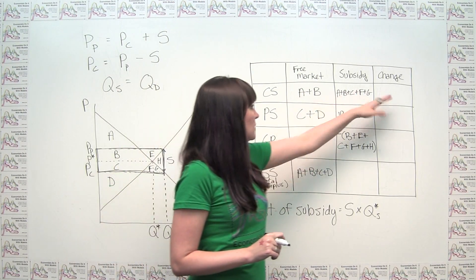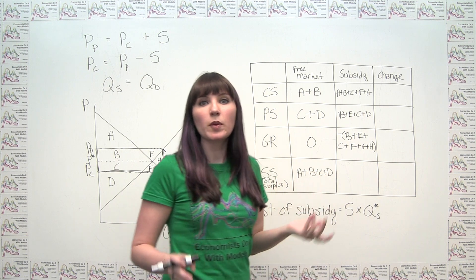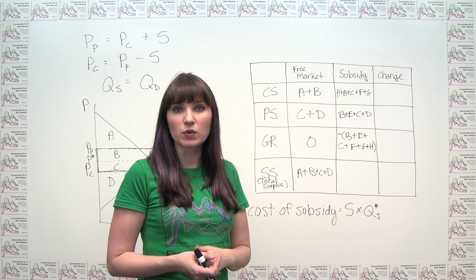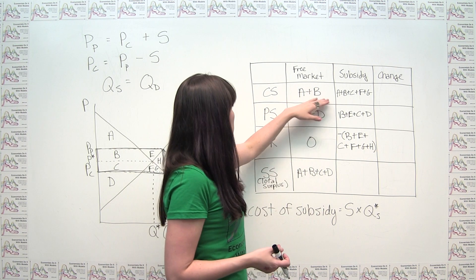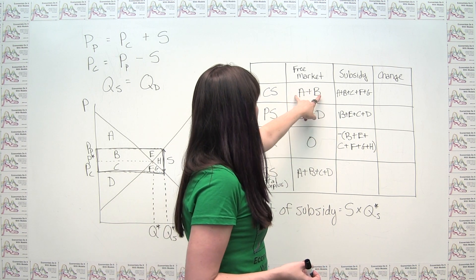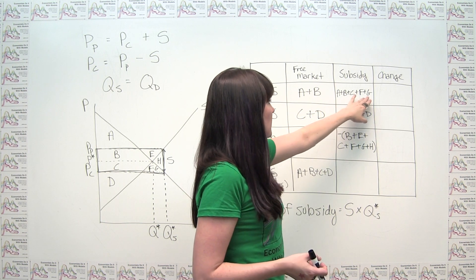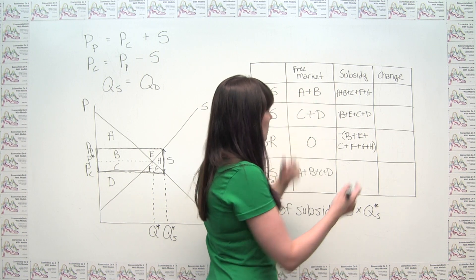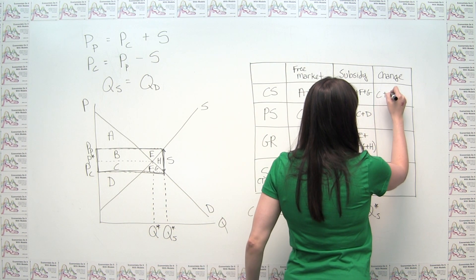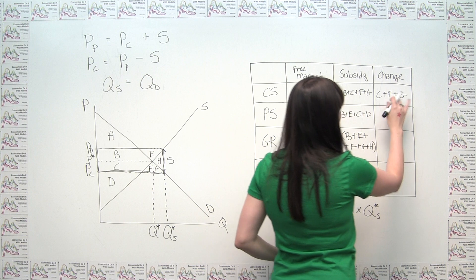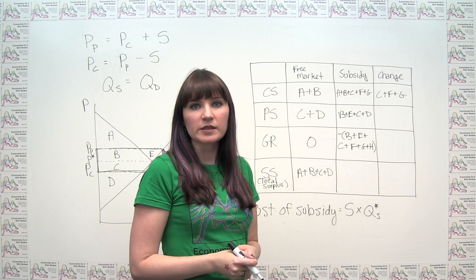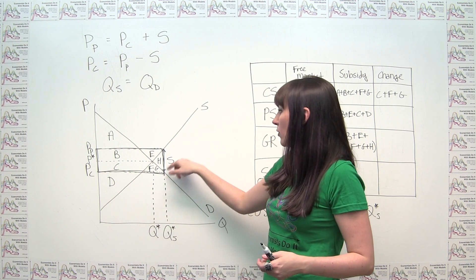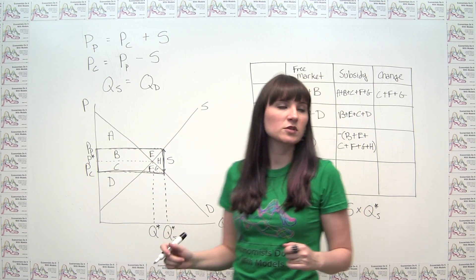So we can go through now and we can calculate the changes for each individual party to understand who is made better off and who is made worse off when a subsidy is put in place. So we notice here, the consumers used to only get A and B, now they get A, B, C, F, and G. So their change is just this minus this or C, F, and G. So consumers gain from a subsidy. Not surprisingly because they're consuming more than they were before and they're consuming more at a lower price. That's good for consumers.